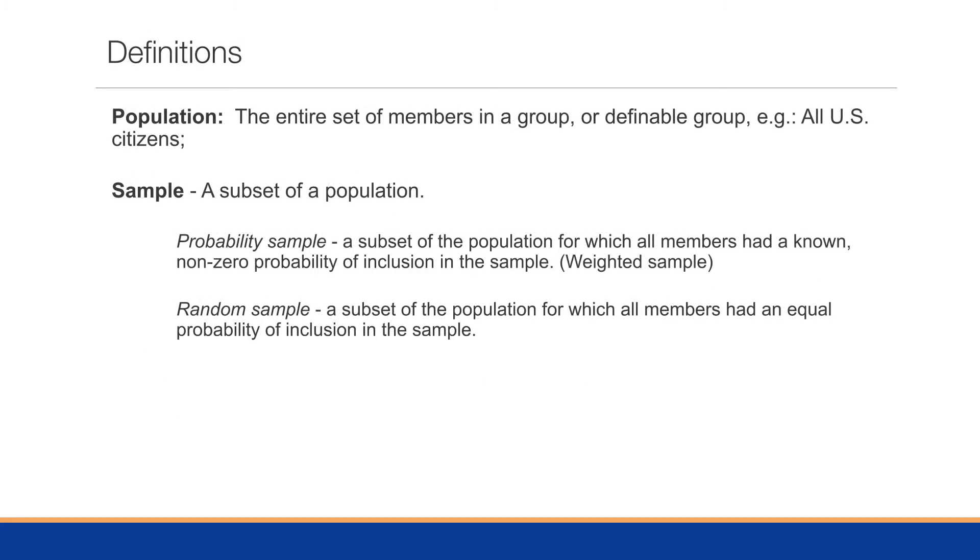Going back to a review of some univariate analysis, we'll use some of the same definitions. For example, the population is the entire set of members in a group or definable group, say all U.S. citizens. And a sample is a subset of that population. From a sample, we may have a probability sample, which is a subset of the population for which all members had a known non-zero probability for inclusion. This might be a weighted sample.